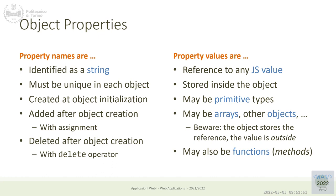Values can also be functions. Functions are objects — a special type of object. When a property of an object contains a value, that value could be a function. In other languages, we call those methods and distinguish them from property values, but in JavaScript there's no such distinction. It's just a property that happens to have a value of type object, and therefore it can be called.